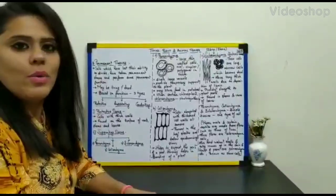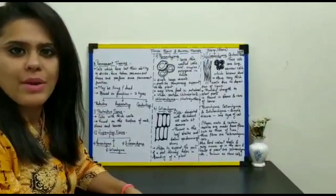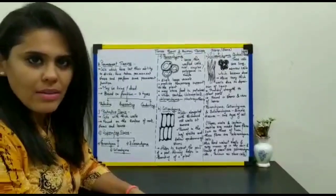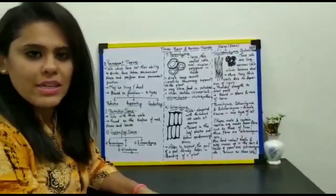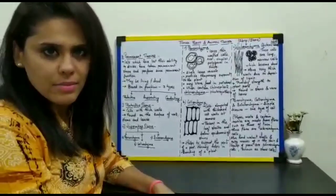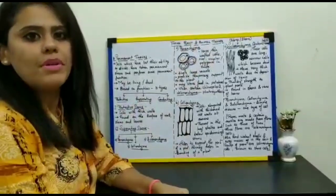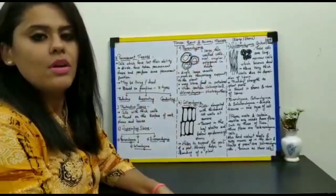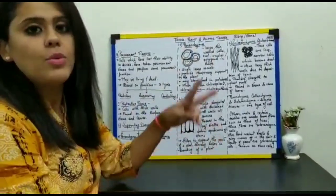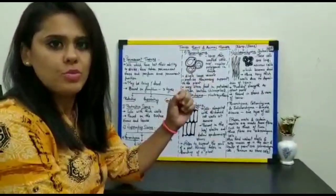Hello students, continuing with our chapter Tissues, which includes plant and animal tissues. In the last slide, we started with the introduction part. We also understood the relationship between tissue, organ, organ system and organism. We started with the first important part of this chapter, that is plant tissue. There are two important types: meristematic tissue and permanent tissue.